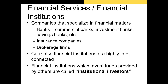Financial services firms, or financial institutions, are companies that specialize in financial matters and help organizations and individuals manage their money. The most prominent examples are banks, insurance companies, and brokerage firms. It is important to note that as a result of the Great Depression, financial institutions were not allowed to provide banking, brokerage, and insurance services all at once. The U.S. federal government mandated right after the Great Depression that these services be provided by separate institutions.